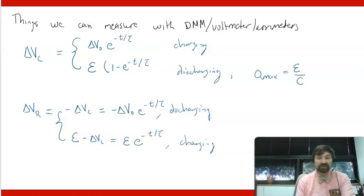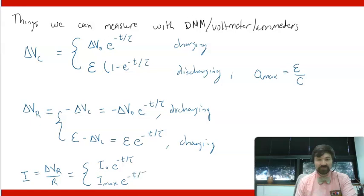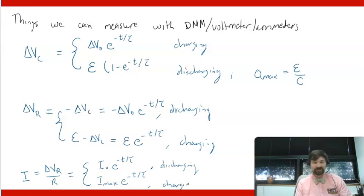And yeah the other thing that you could easily measure is current. So I should look like delta V sub R over R by Ohm's law. And so either way what you get is either I_naught e to the negative t over tau or I_max e to the negative t over tau. Again for discharging and charging. And so where does I_max come from? It comes basically from I_max is equal to epsilon over R and I_naught is equal to delta V_naught over R.